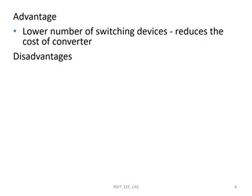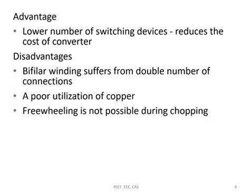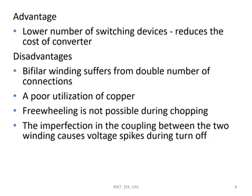For an SR motor with bifilar winding it requires double the number of connections. The main disadvantage is the poor utilization of copper material. Freewheeling is not possible during the chopping operation. If there is an imperfection in the coupling between the two winding sections, it will cause voltage spikes when the switches are turned off. Since more copper is used, the copper loss will be high.